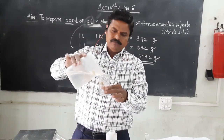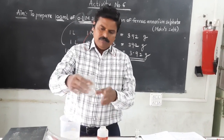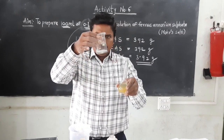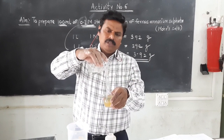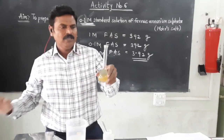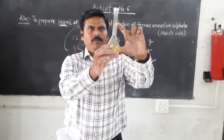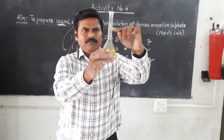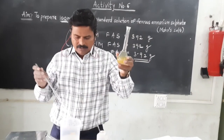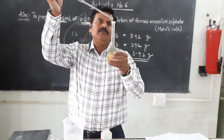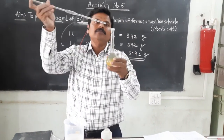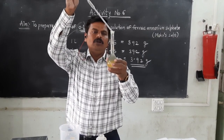Wash the beaker again one more time using a small quantity of distilled water to remove any remaining solution or fine particles, and transfer this solution into the volumetric flask. Check the water level against the standardization mark on the volumetric flask, and use a pipette to add water carefully to avoid exceeding the standardization level.